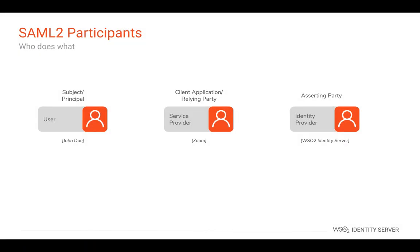SAML 2 has three types of participants: user, service provider, and identity provider. The user, also known as the subject or the principal, represents the end user who has a user account in the identity provider and tries to access the service provider application. For example, John Doe is the user in this application who holds an account in the identity provider. The client application, also known as the service provider or the relying party, is a web or mobile application that the end user wants to access and perform several operations upon. The identity provider manages the user accounts and is responsible for verifying the user's authenticity.